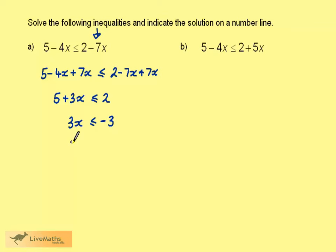Now divide both sides by 3 and we get x is less than or equal to minus 1. Indicating on a number line, here we have minus 1, less than or equal to is a filled in circle and an arrow extending to the left.